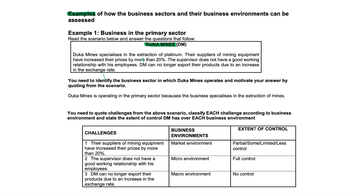Duka Mines, DM, specializes in the extraction of platinum. Their suppliers of mining equipment have increased their prices by more than 20%. The supervisor does not have a good working relationship with the employees, and Duka Mines can no longer export their products due to an increase in the exchange rate — the Rand is a lot weaker now. You need to identify the business sector in which Duka Mines operates and motivate your answer by quoting from the scenario.